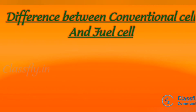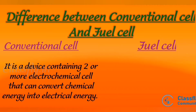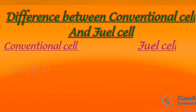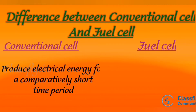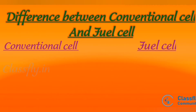Now let us move on to the difference between conventional cell and fuel cell. By definition, a conventional cell is a device containing two or more electrochemical cells that can convert chemical energy into electrical energy, whereas a fuel cell is a device that can also convert chemical energy into electrical energy. Regarding duration, a conventional cell produces electrical energy for a comparatively short time.